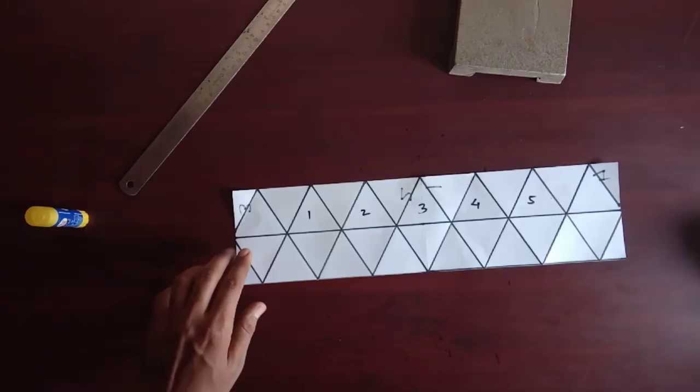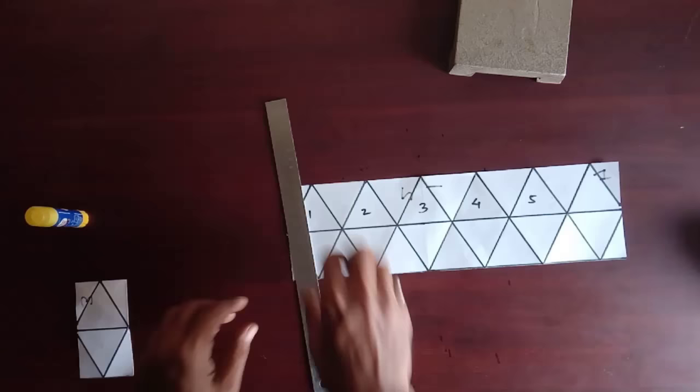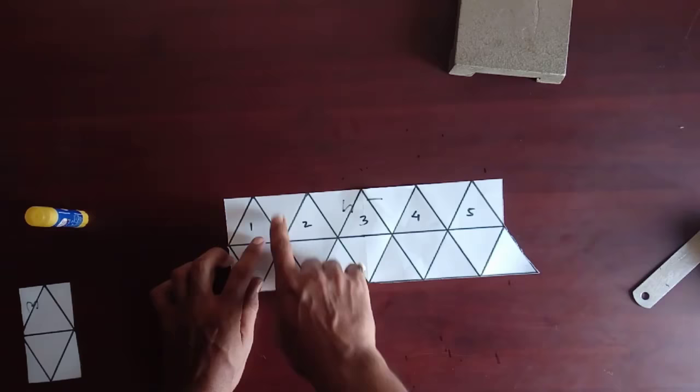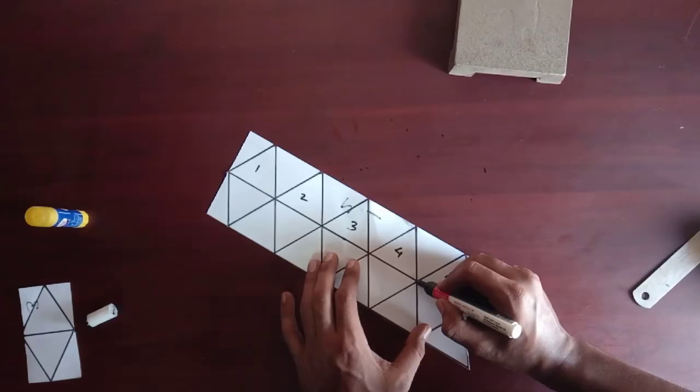Now cut the extra triangles from both sides. Cut exactly as I am cutting in this video. Now separate the 5 marked triangles using scissor.